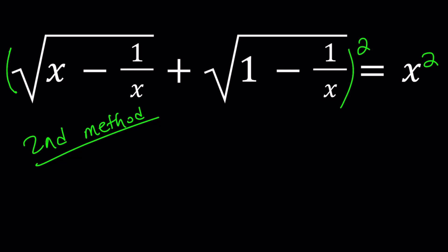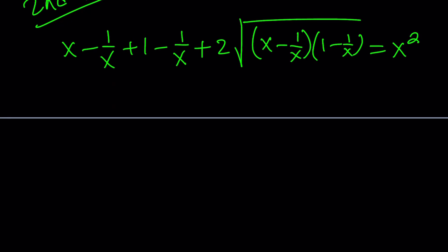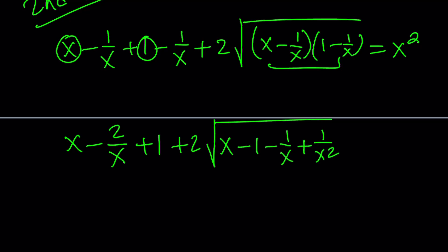When I square both sides, I have a plus b inside the parentheses, so when we square we get a squared plus b squared plus 2ab, which is going to be the product of these two expressions. And that whole thing is equal to x squared. Let's go ahead and simplify this. We have x minus 1 over x minus 1 over x, that's x minus 2 over x, and then we have a plus 1, and then 2 times the quantity, distribute, x minus 1 minus 1 over x plus 1 over x squared. And that's equal to x squared.